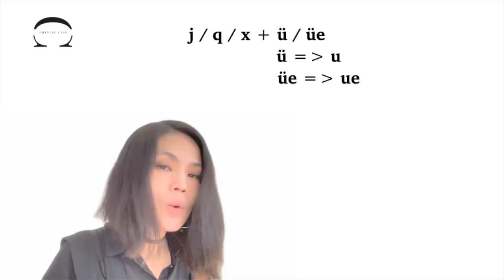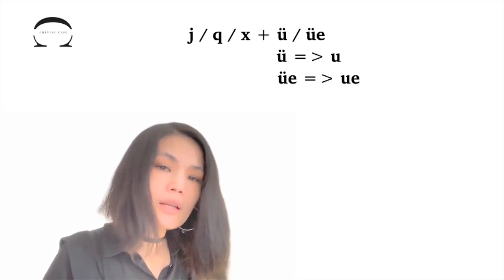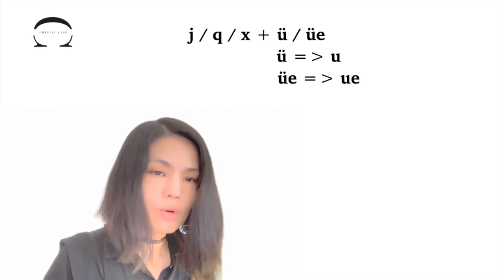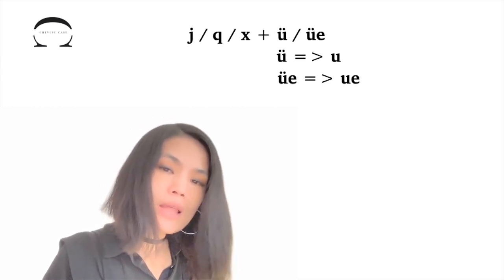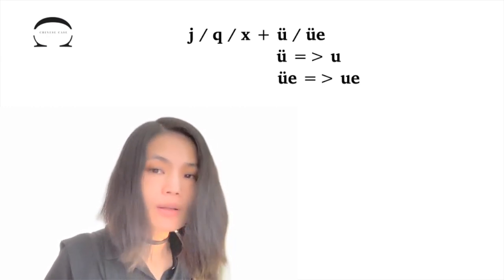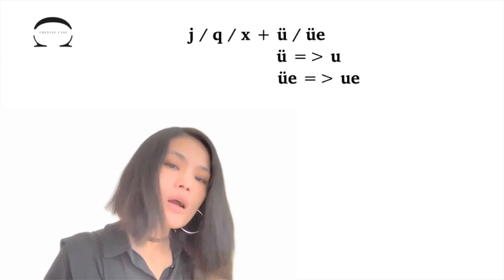When they are paired with J, Q, X, the two dots of the letter ü are omitted in the written form. But please note that when paired with N and L, they keep the two dots.